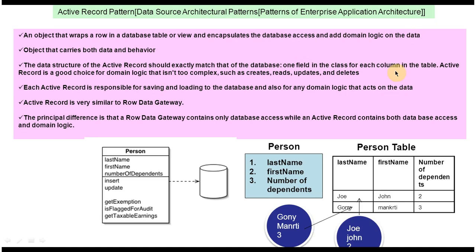To explain this design pattern, I have taken a person table. The person table contains three columns: last name, first name, and number of dependents. It contains two rows — the first row represents the Joe information and the second row represents the Goni information.